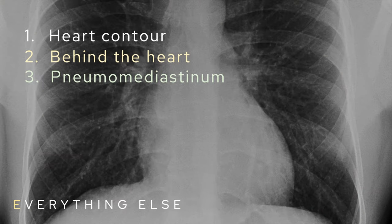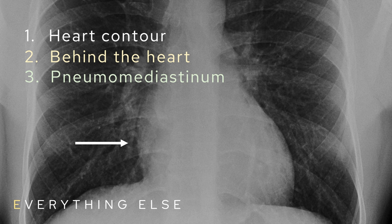The third thing I look for is pneumomediastinum — looking around the contour of the heart for an excessive amount of lucency surrounding it, possibly with another white line around that lucency. Remember it's normal to see a little shadow around the heart due to the Mach effect, which is completely normal. Get your eye in by looking at lots of x-rays so you know what normal looks like.